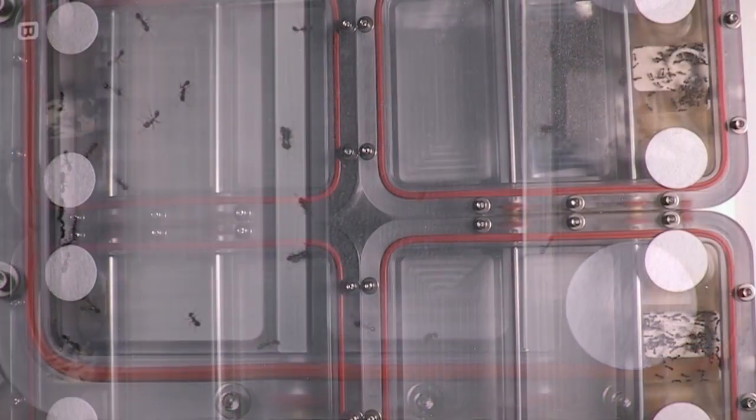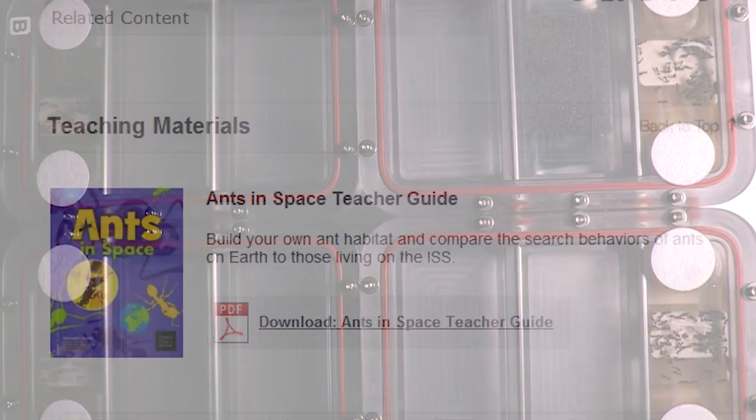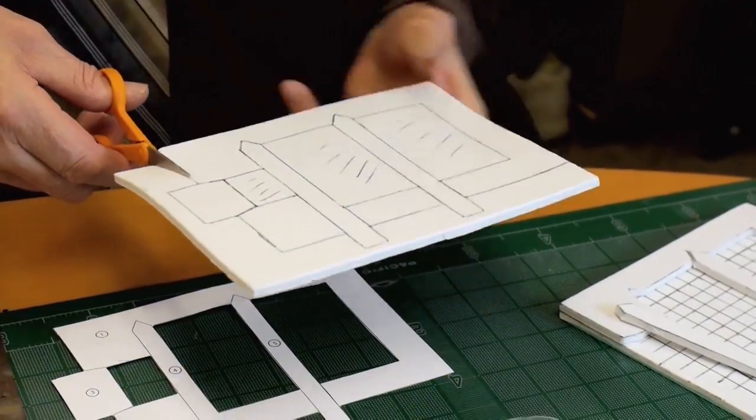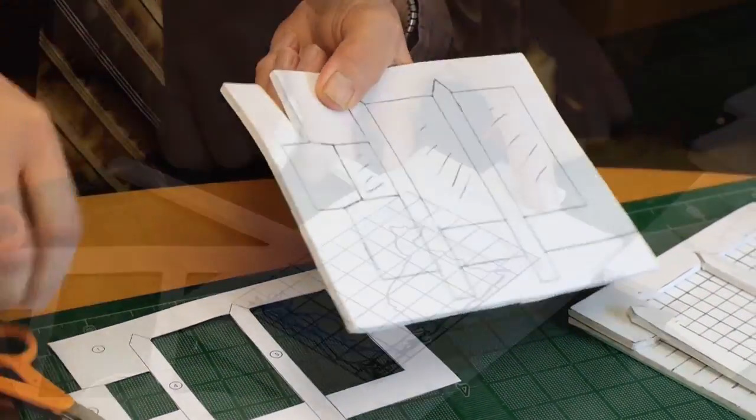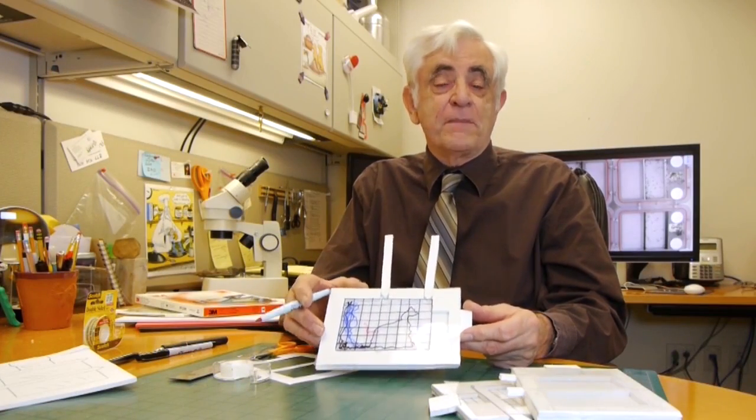And one of the neat things about this experiment is that it's going to have an educational outreach. So classrooms, kids down on Earth, can set up their own control experiments that will look very similar to this. And they can see how the behaviors of the ants might change in microgravity versus their ants that they might have down on Earth.